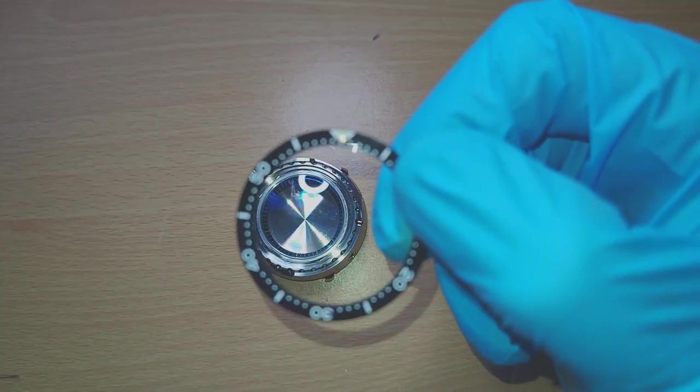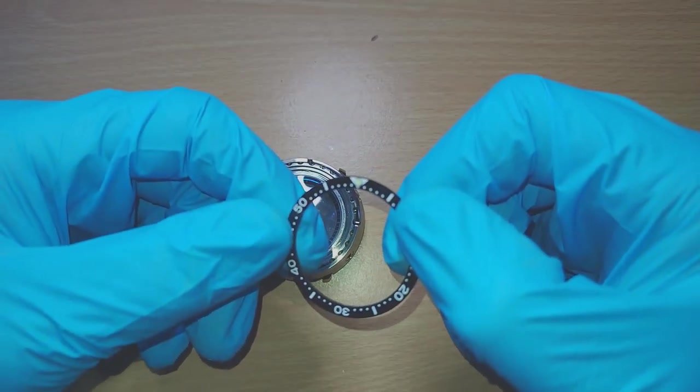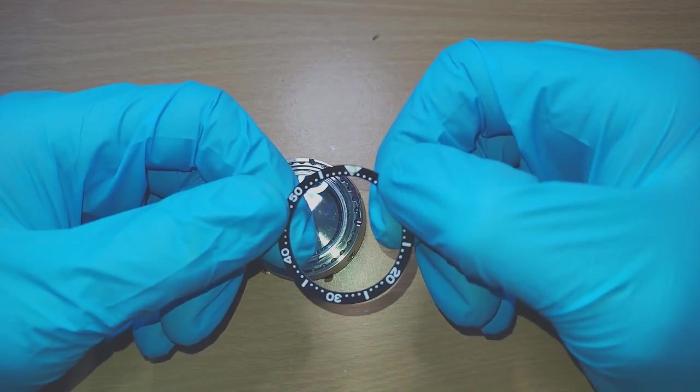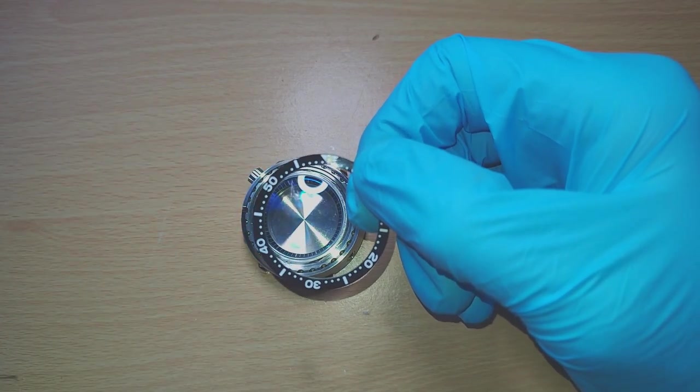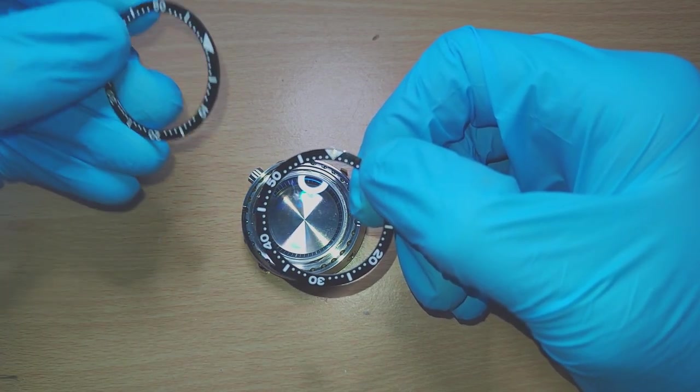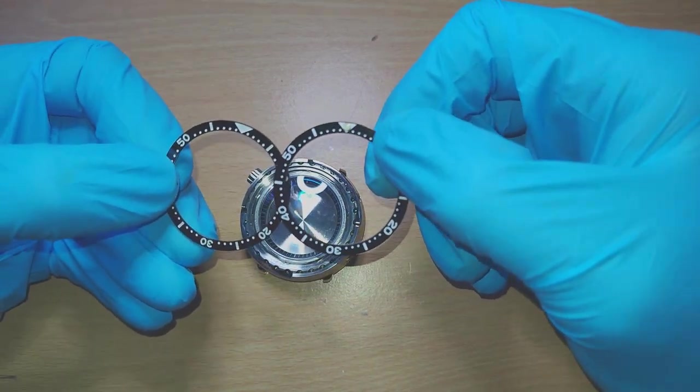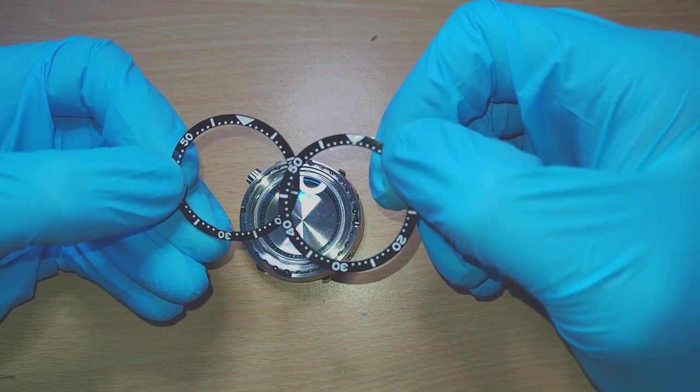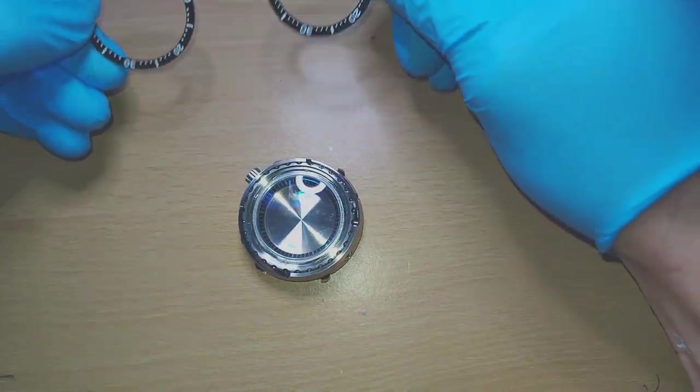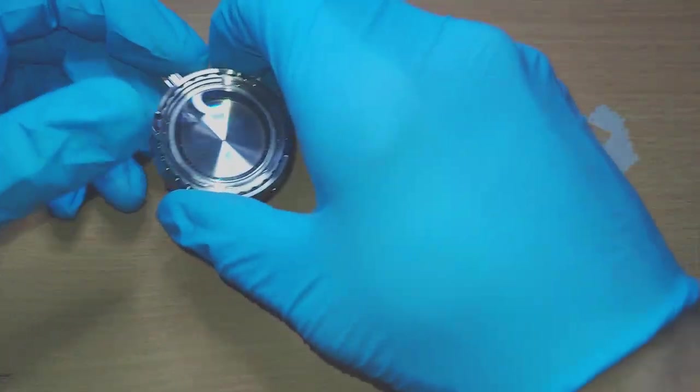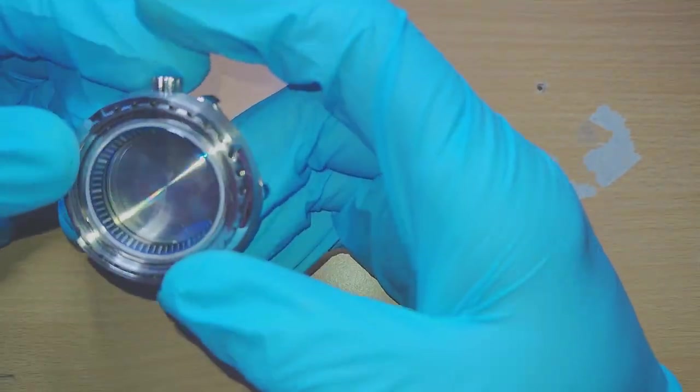The original didn't have that, so we're not going to be using it. I'm going to be swapping it out for another ceramic bezel. This ceramic bezel came on another watch, a Steel Dive. It has no loom pip, it's a fully loomed ceramic insert bezel, and we're going to be using that one.